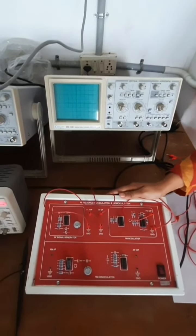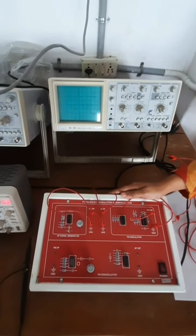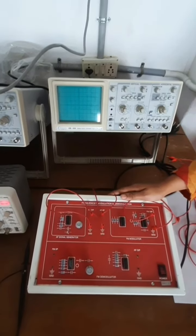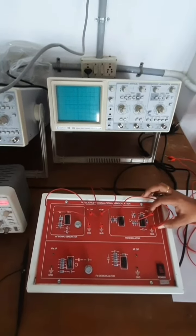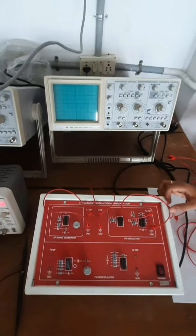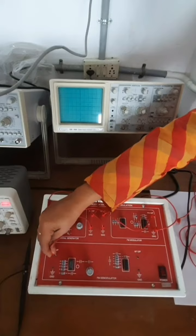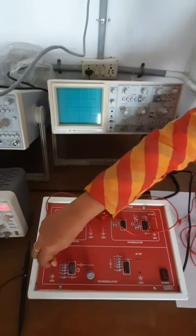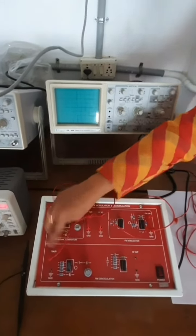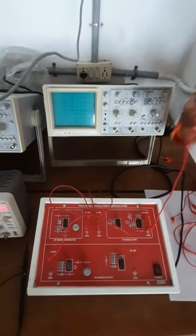To extract the original signal, we have to demodulate the message signal from the FM modulated signal. Further, we have to connect the modulator output to the input of FM demodulator at the point labeled FM input, and ground to the ground terminal.